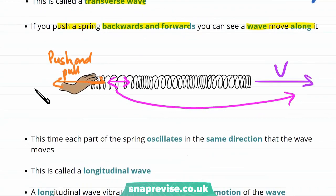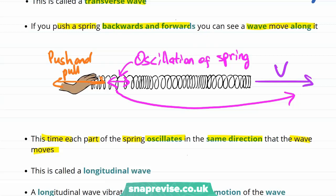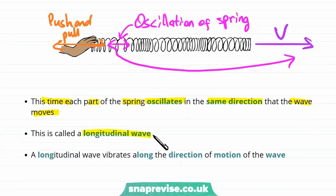This time each part of the spring oscillates in the same direction that the wave is moving in. The oscillation of the spring is in the same direction as the motion of the wave. So this is our other type of wave and we call it a longitudinal wave. A longitudinal wave vibrates along the direction of motion of the wave.